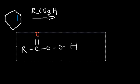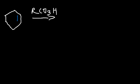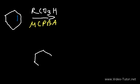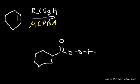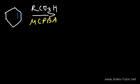Peroxy acids are very useful in making epoxides from alkenes. There's another specific peroxy acid you need to be familiar with: MCPBA. It works just the same way as RCO3H. It's a benzene ring with a peroxy acid functional group and a chlorine atom attached at the meta position, so it's called meta-chloroperoxybenzoic acid. When we combine it with an alkene, it's going to produce an epoxide.